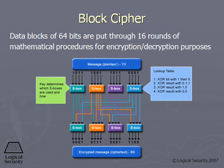Block ciphers go through rounds and S-boxes. Each round consists of the mathematical and logical functions that determine how the bits are going to be encrypted. So one block of the message will go through several rounds, and if you're using DES, it's going to go through 16 rounds. Every block goes through 16 rounds.